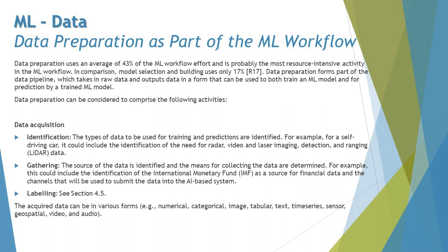43% is not a small number — it means you spend most of your time in the workflow preparing the most appropriate dataset for the ML model. In comparison, model selection and building uses only about 17%. Data preparation forms part of the data pipeline, which takes raw data and outputs data in the form that can be used to both train an ML model and for prediction by a trained ML model, including separate sets for training, validation, and testing.